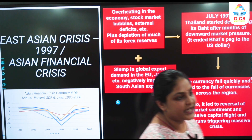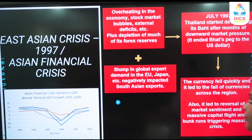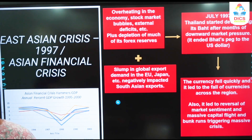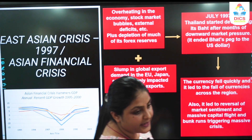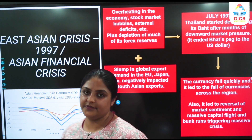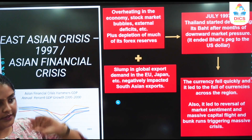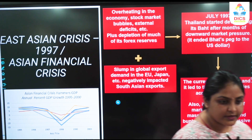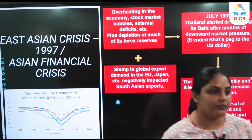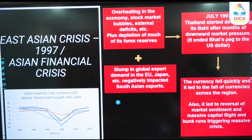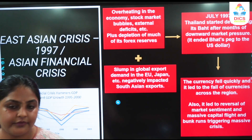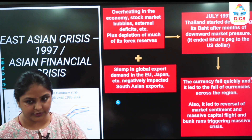It began in July 1997 when, because of overheating in the economy, stock market and real estate bubbles, external debts or external deficits, all of that together plus forex reserves depletion — because you need to pay more when you are importing more, you need to pay in foreign currency — plus the slump in global export demand in the European Union, Japan, etc.